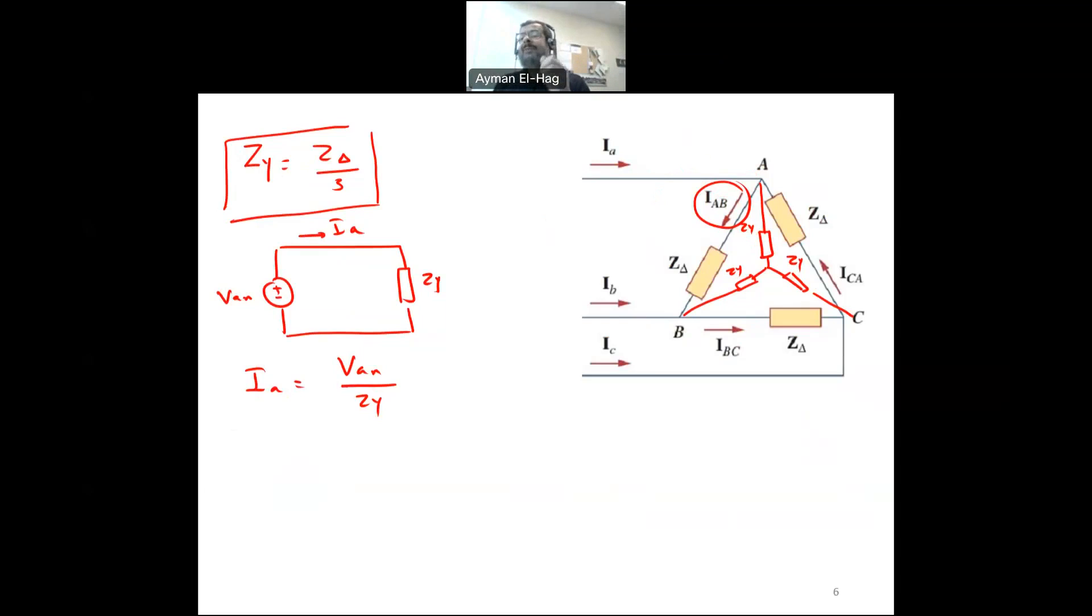So if I want to find IAB in the actual delta connection, then I have to use the relationship that we started the video with, which is the relationship between the line current and the phase current. So we know that IA is equal to root 3 IAB angle of minus 30. Now, my intention here is to find IAB, which is equal to IA, the current that we found from the single phase, divided by root 3 and plus 30.